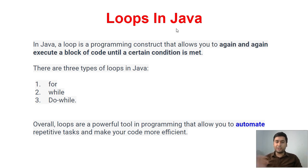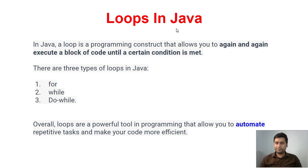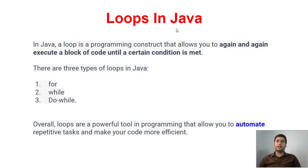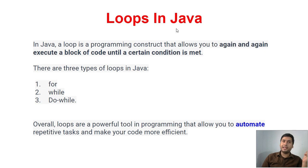In Java, a loop is a programming construct. Simply, if someone asks you what is a loop, you can say: a loop is one of the constructs that allows you to execute a block of code again and again until a certain condition is met. The loop will do operations for certain conditions, or it can run infinite times. That is called a loop.